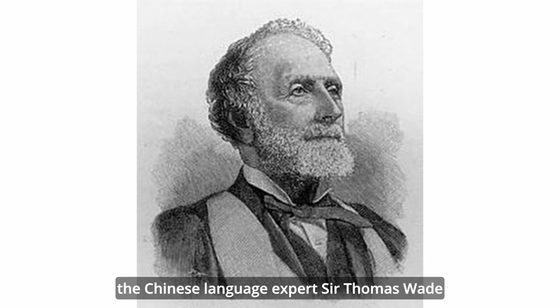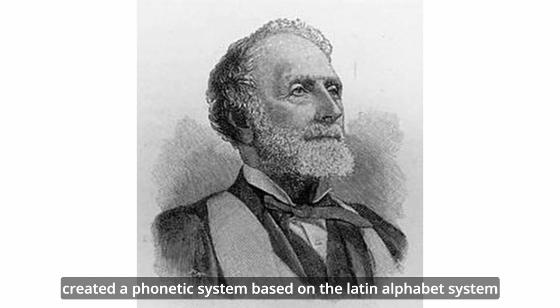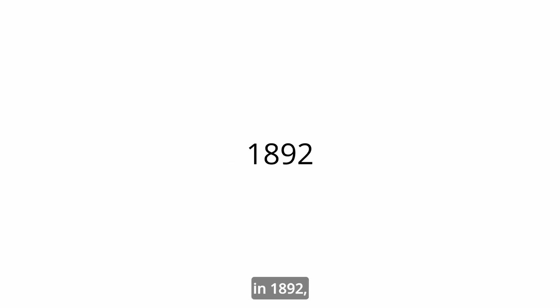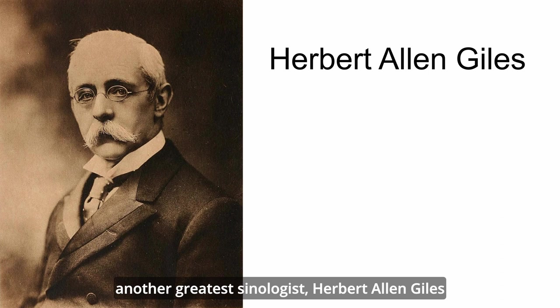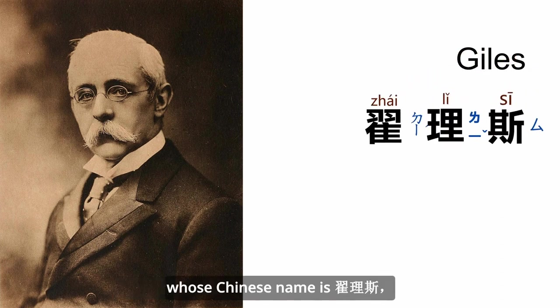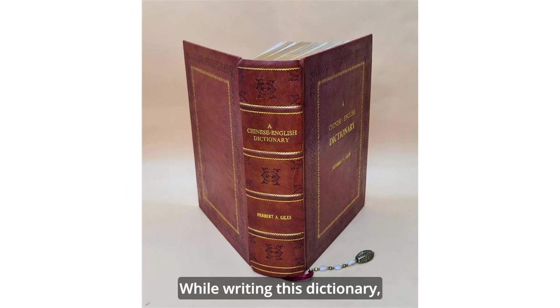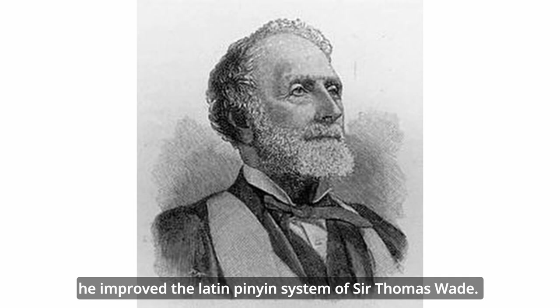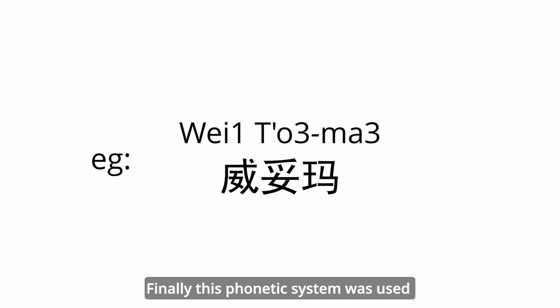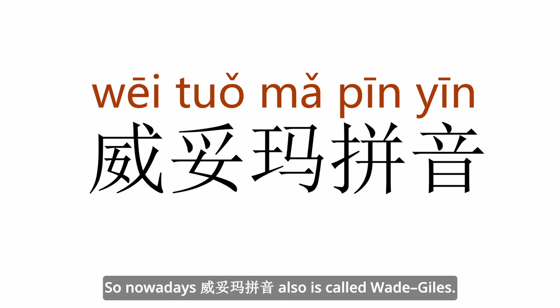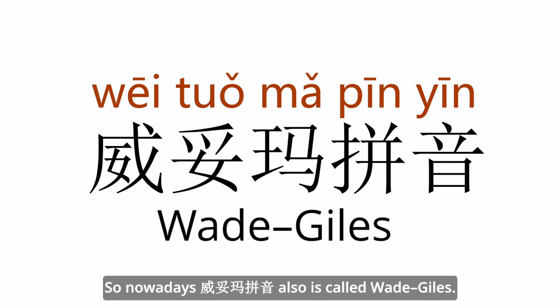Therefore, in 1867, Chinese language expert Sir Thomas Wade created a phonetic system based on the Latin alphabet, and this is also the first Latinization pinyin system. Then in 1892, another great sinologist Hubert Allen Giles, whose Chinese name is Jailisi, completed his Chinese language dictionary. By writing this dictionary, he improved the Latin pinyin system of Sir Thomas Wade. Finally, this phonetic system was used to label the pronunciation of Chinese characters in his dictionary.